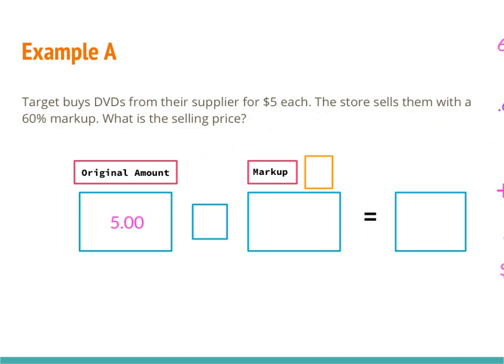The original amount is five dollars. Since it's a markup I'm adding, I need to find the markup. The markup is 60% — as a decimal, moving the decimal two places to the left gives me 0.60. I multiply five dollars times 0.6 in my calculator and end up with three dollars.